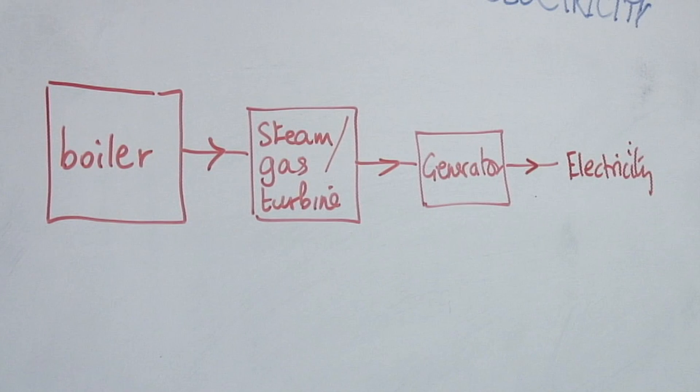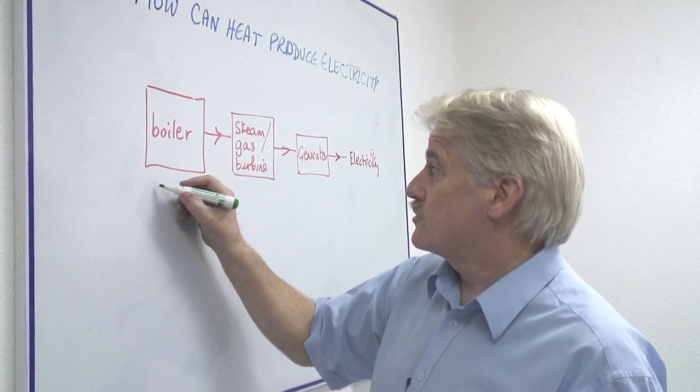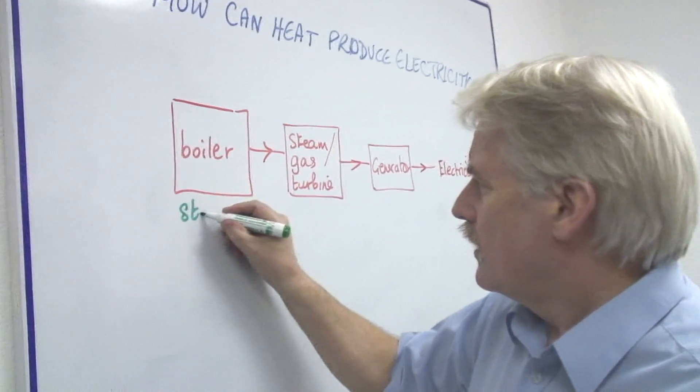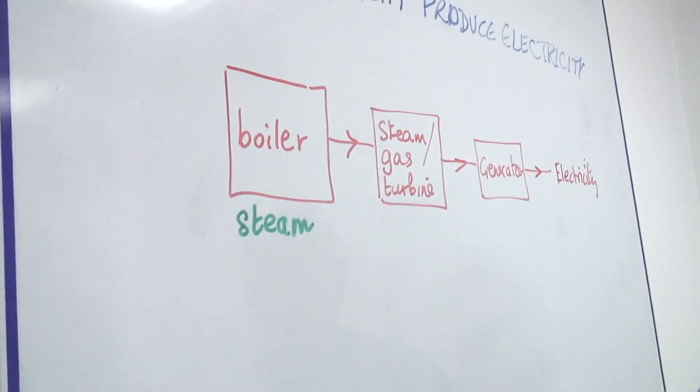The first thing we have in this diagram is a boiler and the boiler will produce steam. How can we produce the steam?